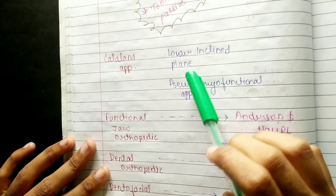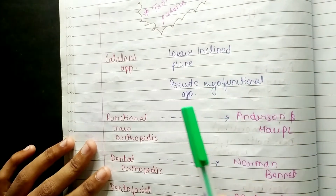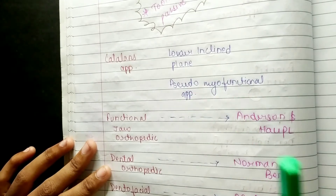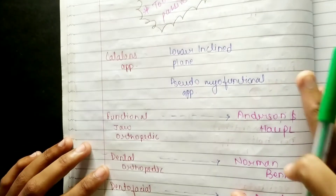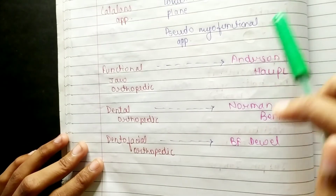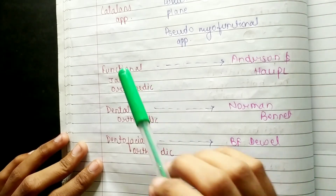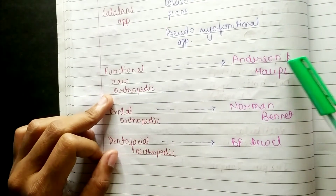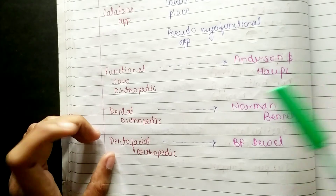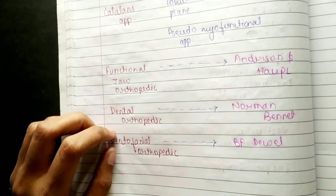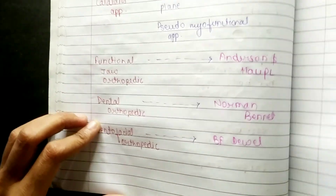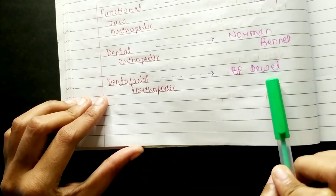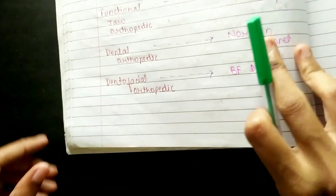Catlin's Appliance is a lower inclined plane and is also called a Pseudo Myofunctional Appliance. Remember, no discoverer is specified for this appliance.